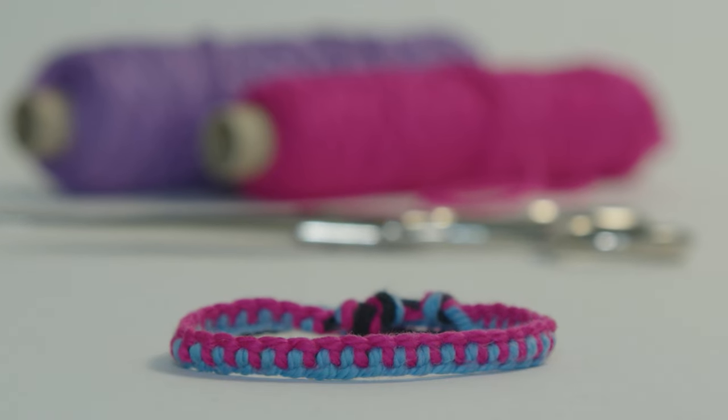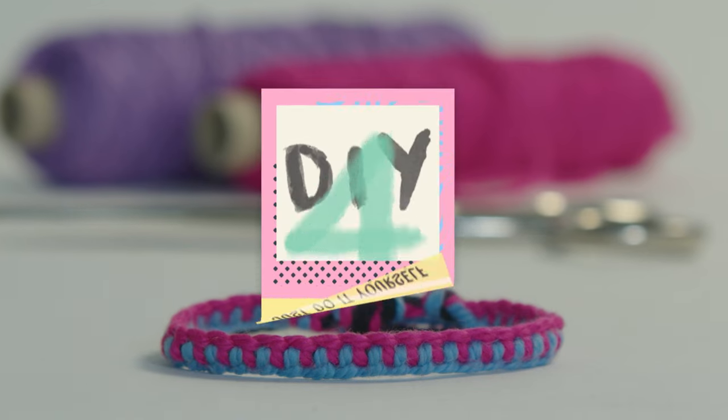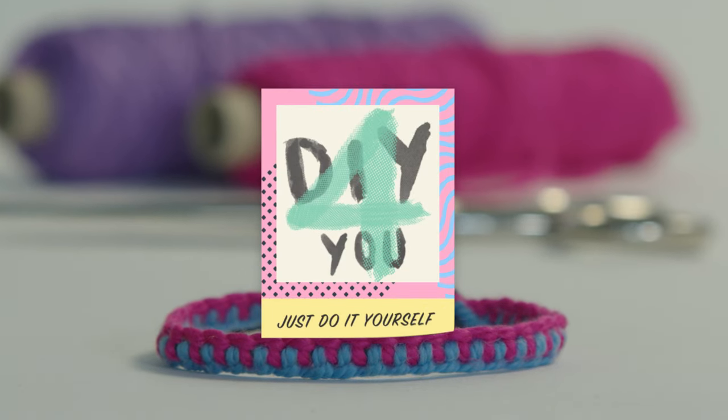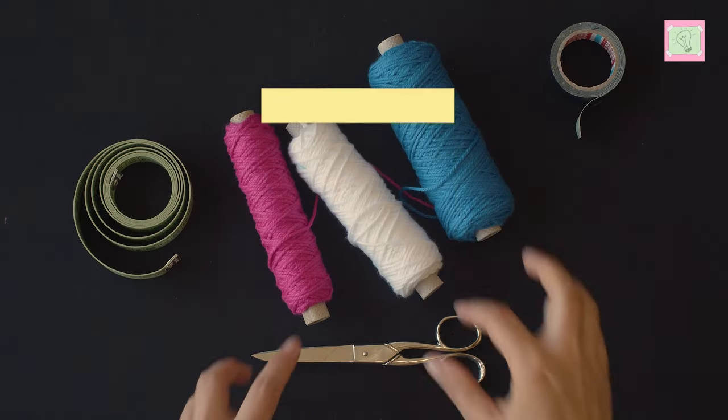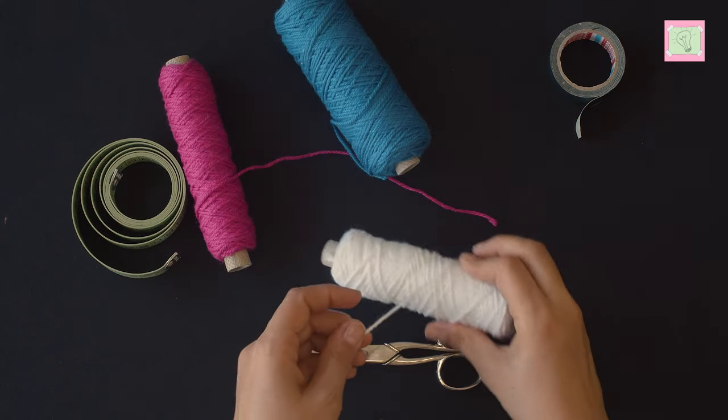In this video I'll show you how to tie a simple bracelet from three threads. For this you need a tape measure, scissors, sticky tape, and cotton yarn in three different colors.